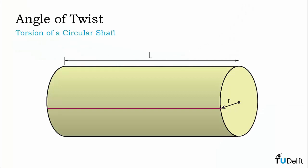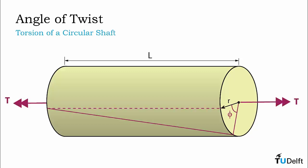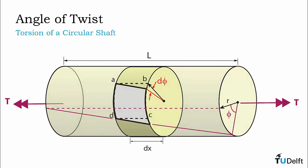Here we have a solid circular shaft of radius R and length L. If you recall from earlier videos, we observed that if we subject this shaft to a uniform torque T, the right-hand side of the shaft will rotate through an angle phi relative to the left-hand side. We will refer to this angle as the angle of twist of the shaft. If we look at a small increment of length of the shaft, dx, we can see once again our element of pure shear deformation.